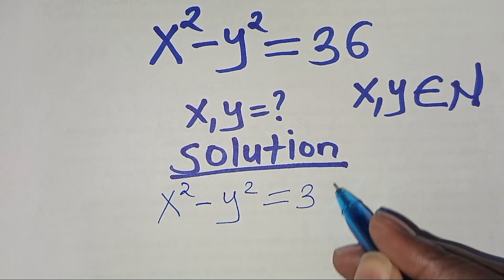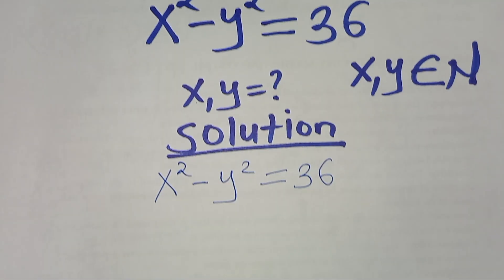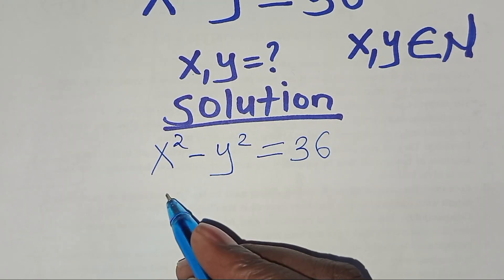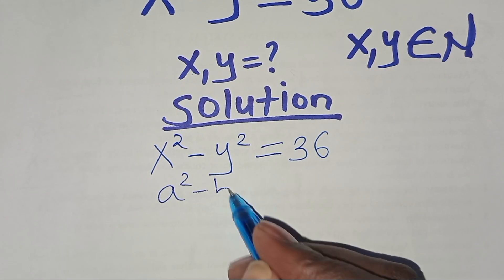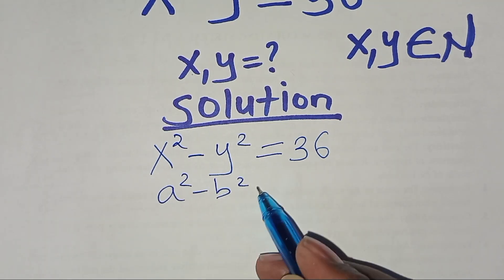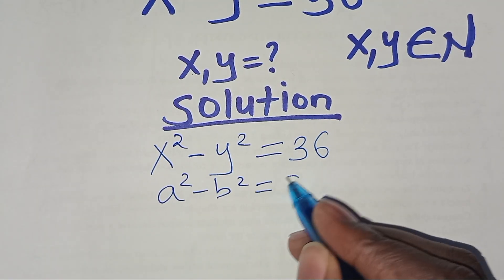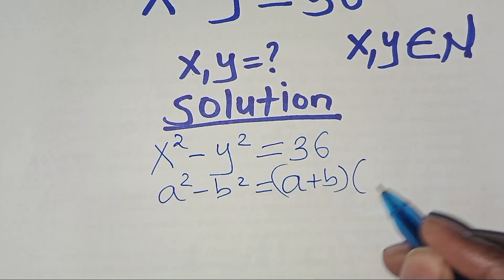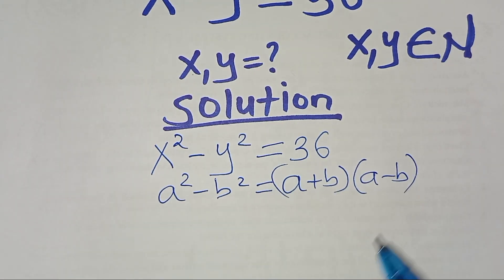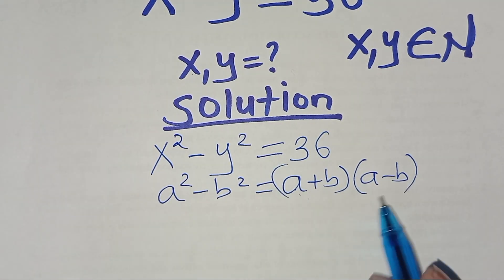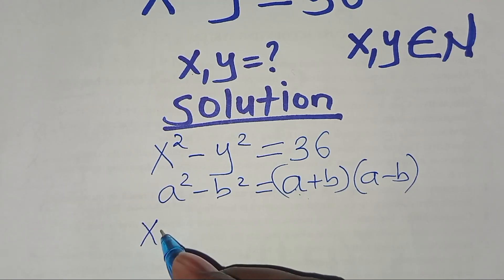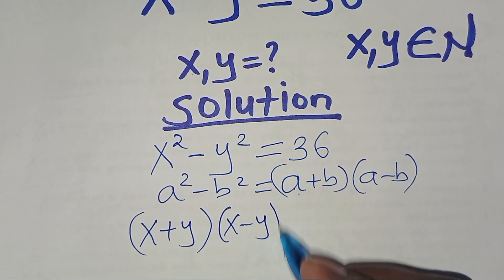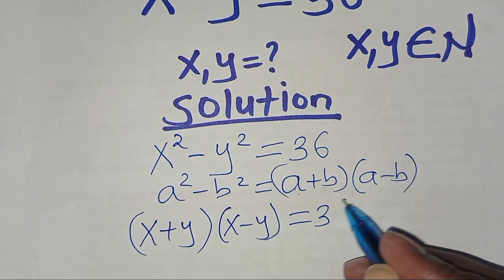Solution: x squared minus y squared equals 36. This is in the form of a squared minus b squared, which is the difference of two squares, expressible as (a + b)(a - b). So we write: (x + y)(x - y) = 36.